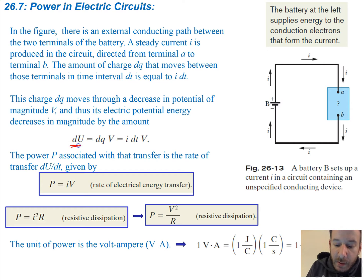Well, so an increment of your potential energy is going to be equal to dq times v. When our dq is going to be the current times dt times our voltage. So the power associated with that transfer is going to be this rate of transfer, du dt, and that's given by p.